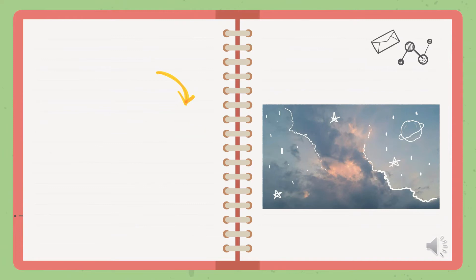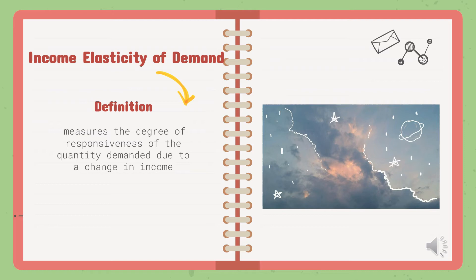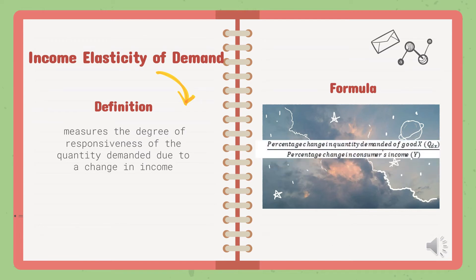Income Elasticity of Demand measures the degree of responsiveness of quantity demanded due to a change in income. It is calculated to determine the type of a particular good — whether it is a normal, luxury, inferior, or necessity good. The formula is EY equals the percentage change in quantity demanded of good X divided by the percentage change in consumer's income.